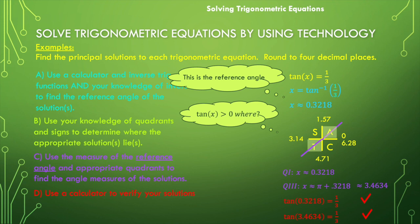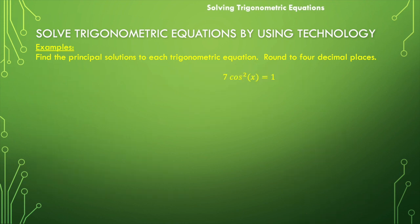Now, the last problem we're going to do together is a little bit different. So we've been preparing for this, and I have full confidence in you. So we're looking at this, 7 times the cosine squared of x is equal to 1. A couple things right away. We do not have our cosine of x isolated, so that's the first thing we're going to need to do. We're going to need to remove that 7 and remove that squaring.